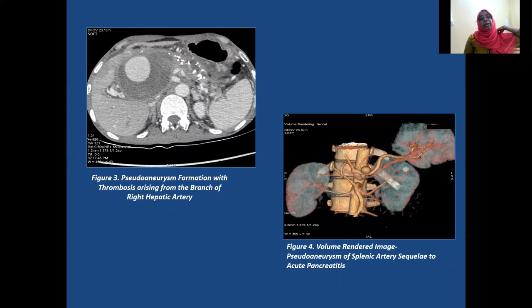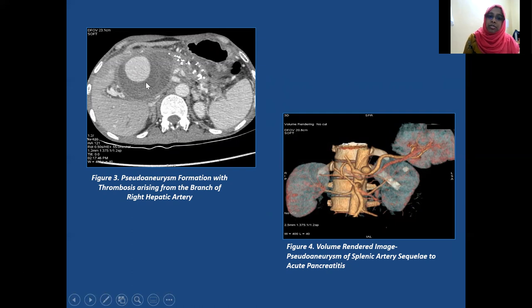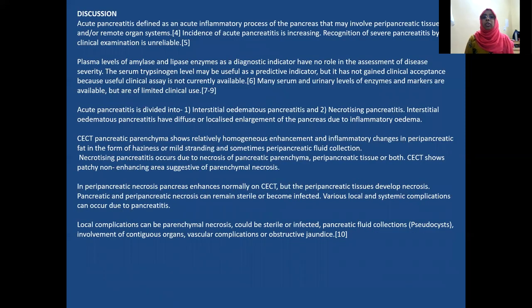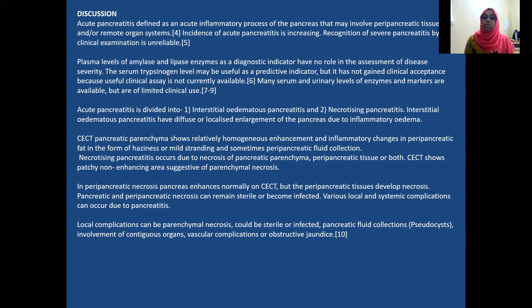Due to the proteolytic effects of pancreatic enzymes on various vascular structures, erosion and pseudoaneurysm formation can occur. We noted a pseudoaneurysm arising from a branch of the right hepatic artery, and we can also appreciate pseudoaneurysm formation of the splenic artery. Acute pancreatitis is defined as the acute inflammatory process of the pancreas that may involve peripancreatic tissues and remote organ systems. It is divided into acute edematous pancreatitis — diffuse or localized enlargement due to inflammatory edema — and necrotizing pancreatitis, which occurs due to necrosis of pancreatic parenchyma, peripancreatic tissue, or both. Contrast-enhanced CT shows patchy non-enhancing areas due to pancreatic necrosis.